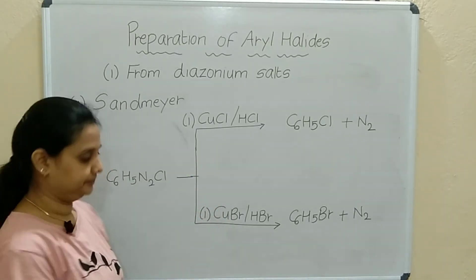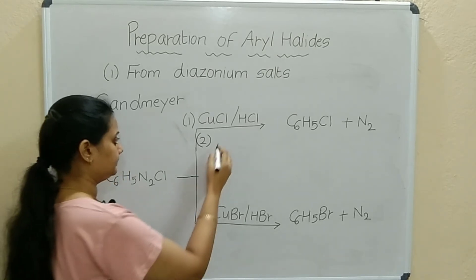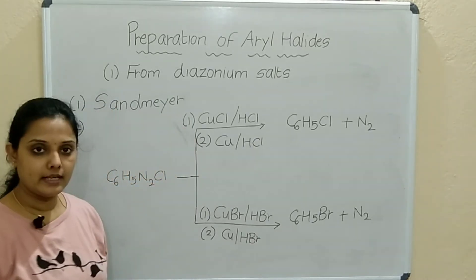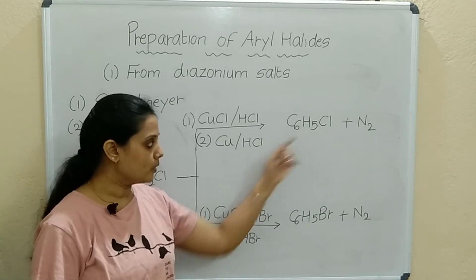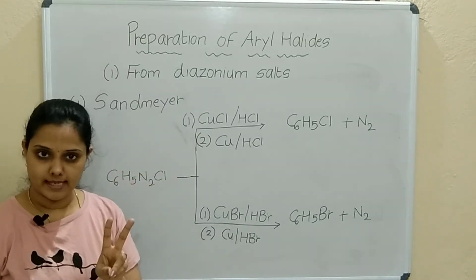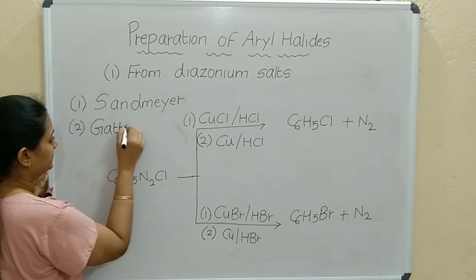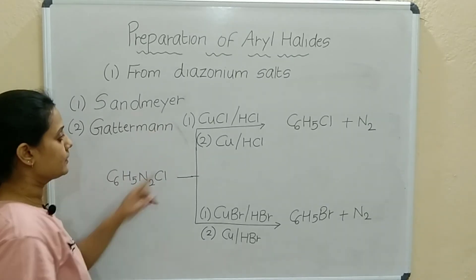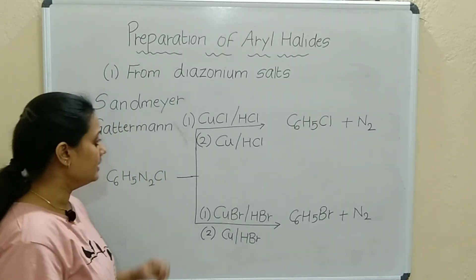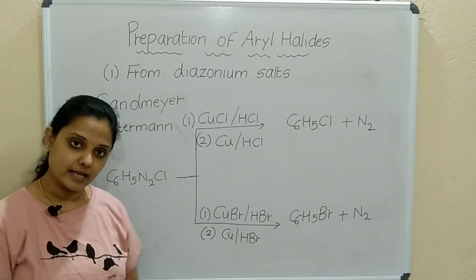The second reaction from benzene diazonium chloride: it is reacted with copper and HCl, or copper and HBr. The products are again chlorobenzene and bromobenzene, with N2 as byproduct. This reaction was given by Gattermann, and it is called the Gattermann reaction. Both Sandmeyer and Gattermann are name reactions.